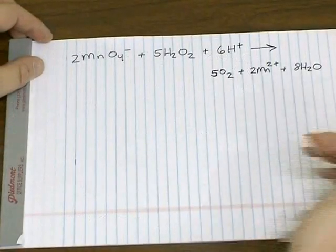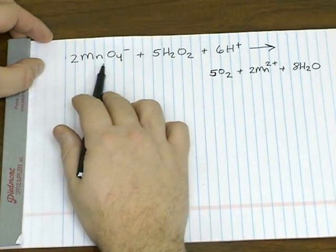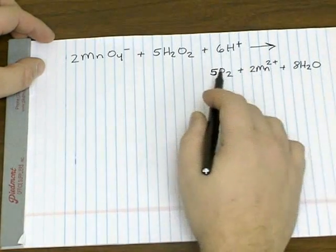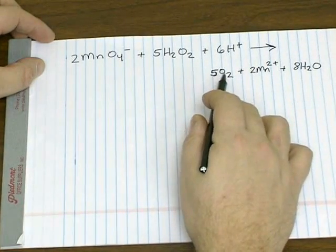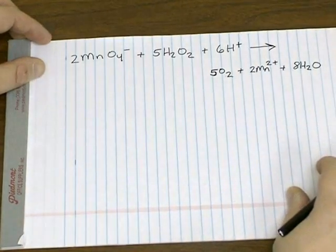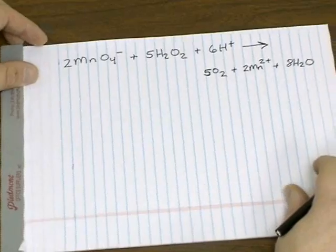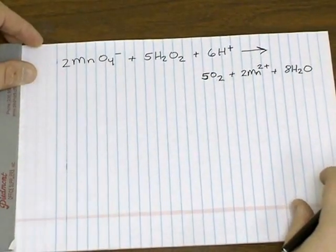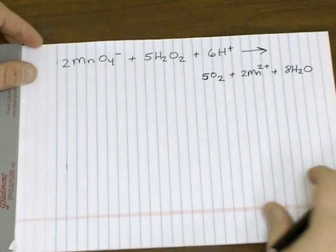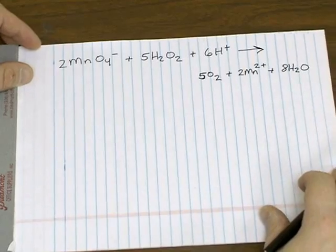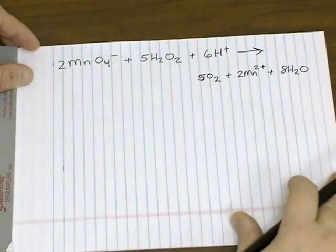Let's look at another example: the reaction of permanganate plus hydrogen peroxide and H⁺, to give O₂, manganese ion, and water. You'll notice this is a net ionic reaction, which are very common for redox reactions. Often the net ionic is shown instead of the complete equation with the spectator ions worked in.